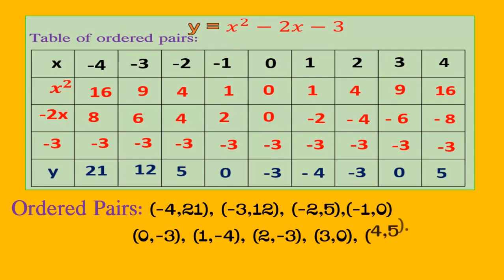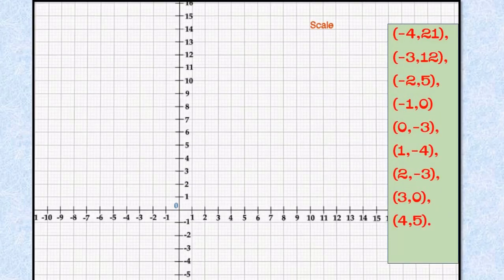Now we have to plot these ordered pairs on the graph sheet. Take the scale as: on the x-axis, 1 centimeter equals 1 unit; on the y-axis, 1 centimeter equals 1 unit. Now we have to plot the points.